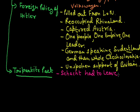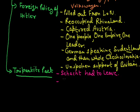One day, Schacht, the Finance Minister of Germany, advised Hitler that instead of spending so much money on war, it would be better to spend a percentage of GDP on economic growth. When Hitler heard this, he immediately removed Schacht from the post of Finance Minister. This shows how Hitler refused to listen to anything that did not align with his ideology.